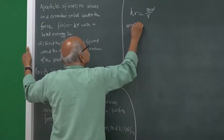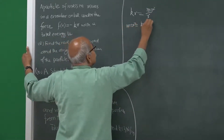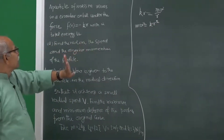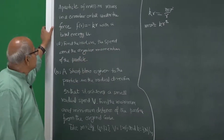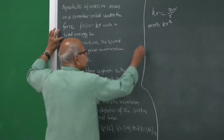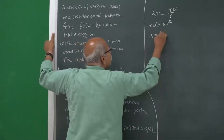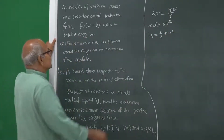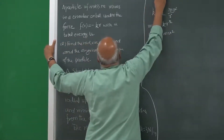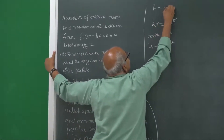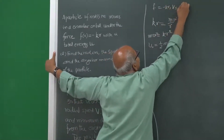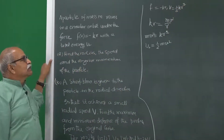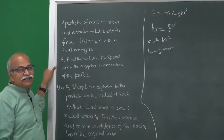So m v squared is equal to k r squared. We have to get the speed as well as the radius, so two unknowns are there. The total energy u naught is equal to half m v squared (kinetic energy) and the potential energy. If F is minus k r, the potential energy is half k r squared — if you differentiate and put a minus sign you will get the force.